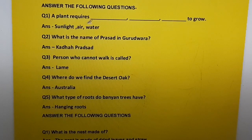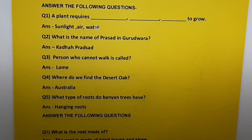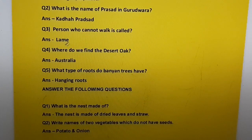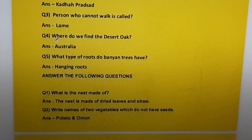Answer the following questions. Question one: A plant requires sunlight, air, and water to grow. Question two: The name of prasad in a Gurudwara is kadha prasad. Question three: A person who cannot walk is called lame.